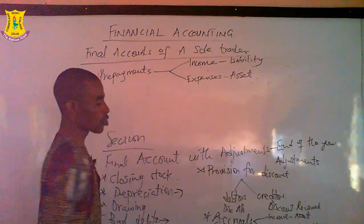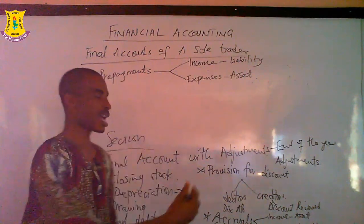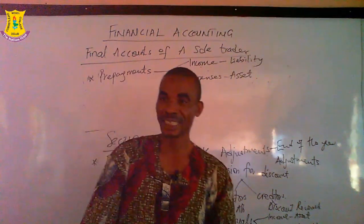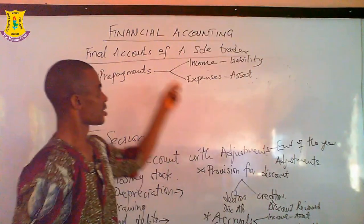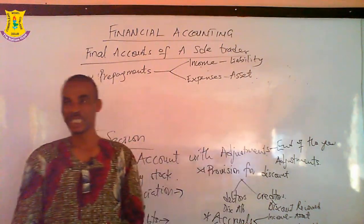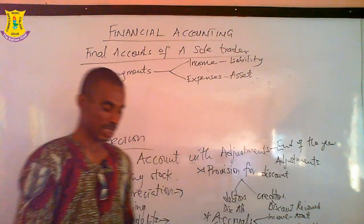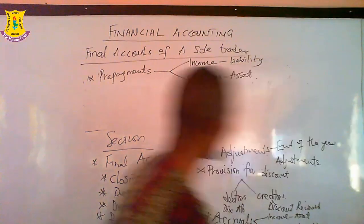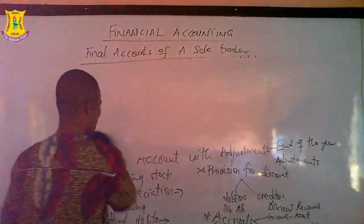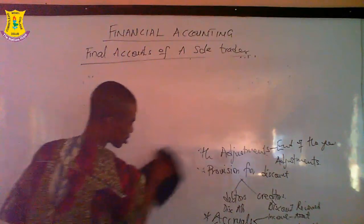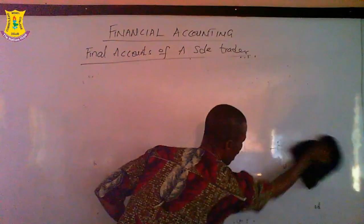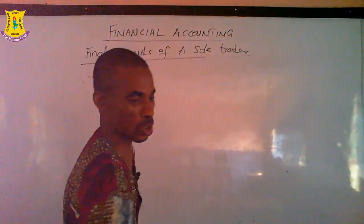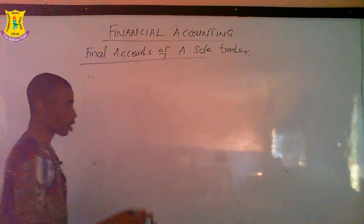With all these analyses, there shouldn't be any problem when you come in contact with adjustments. When it comes to accruals — owing, outstanding prepayments, whether income or expenditure — they have to be added. While prepayments have to be deducted from any information relating to the transaction. So let's look at a brief illustration showing how to handle such a question in an examination.